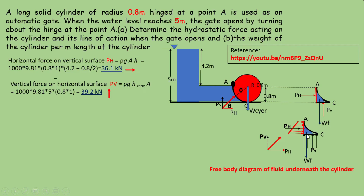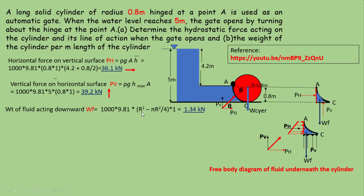Another vertical force is the weight of water within the enclosed area, acting downward. This side is r and this is also equal to r, so the area equals r² minus the quarter-circle area (πr²/4), representing the enclosed region. This area multiplied by 1 gives the volume, and multiplied by the specific weight gives the weight of the fluid acting downward.